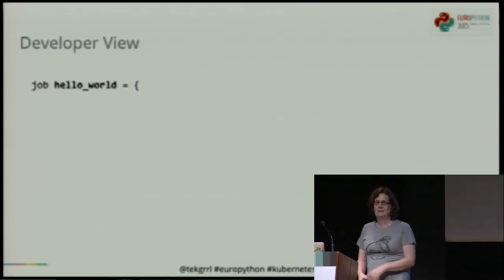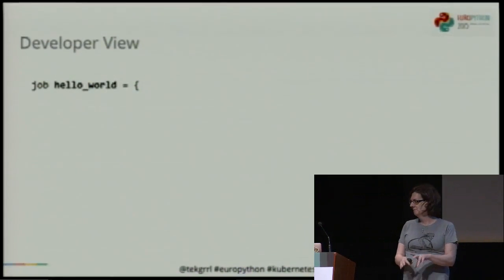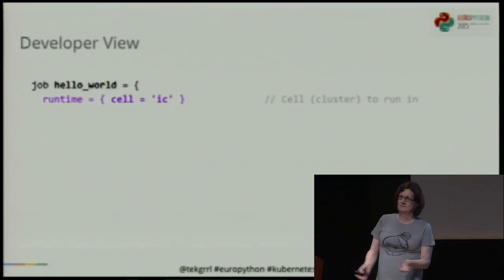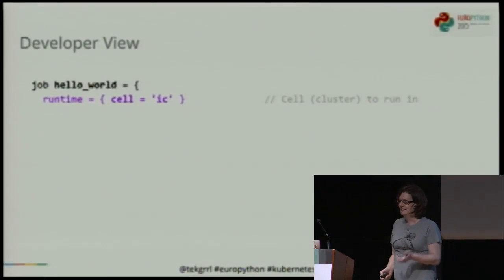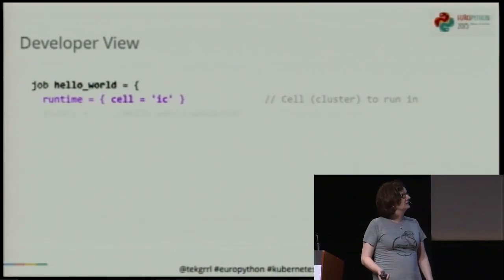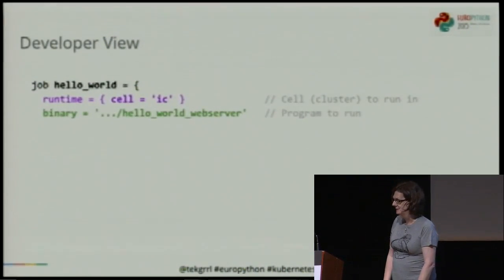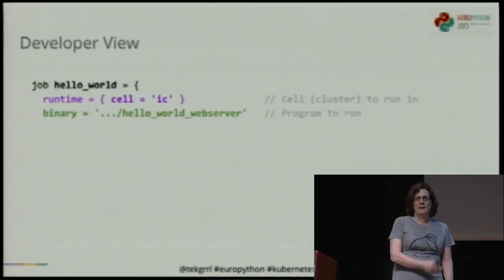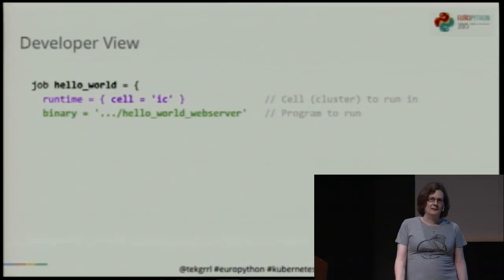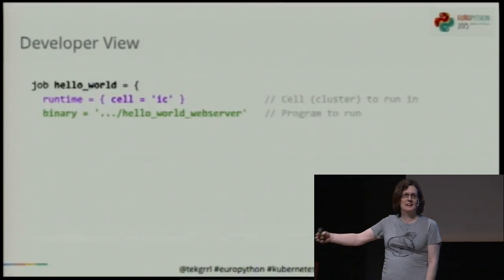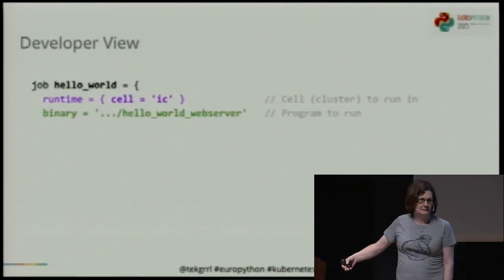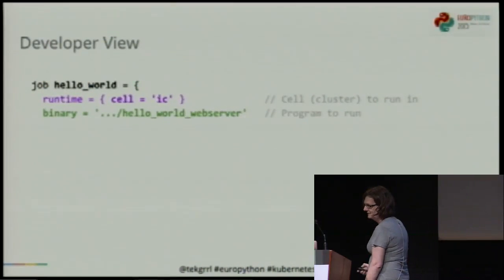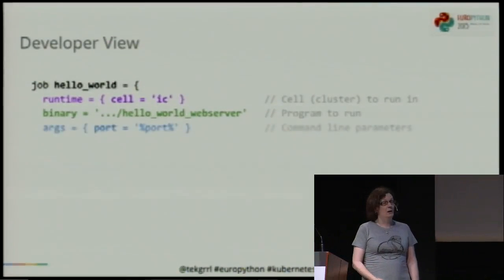The developer creates a job and calls the job 'hello world'. It says which cell to run it in — a cell is a few thousand machines. In this case it's called IC, some random cell name. The developer specifies which binary to use — in this case, a hello world web server. This is going to be a fat binary, statically linked, with all its dependencies. So effectively, we can run it pretty much anywhere without having to worry about the underlying operating system, including the web server. This binary is probably about 50 megabytes.